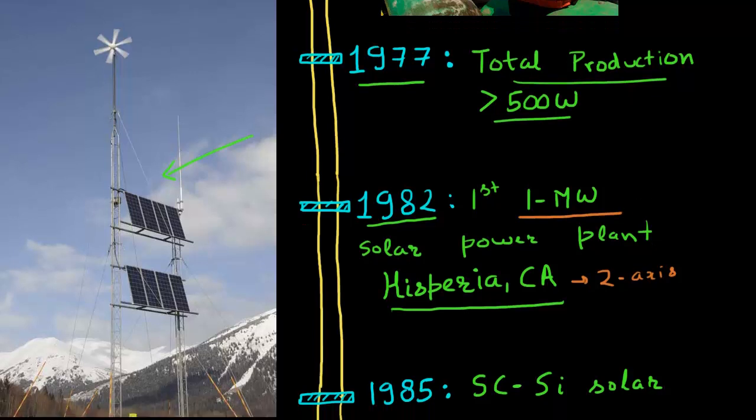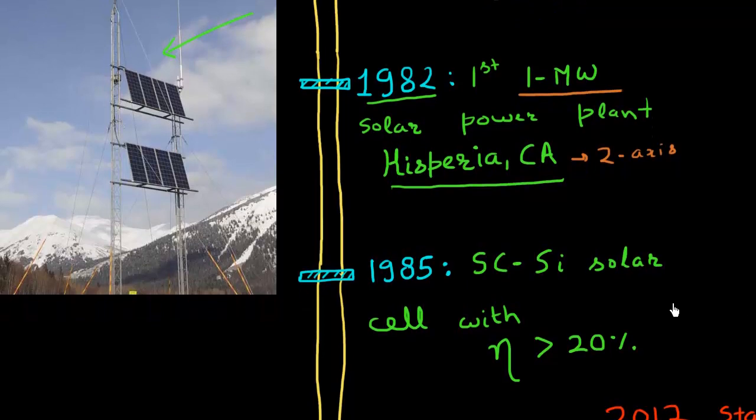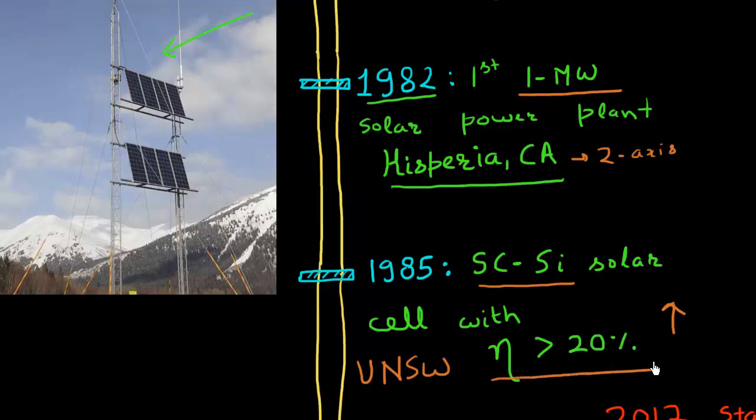At the same time, the efficiencies of these cells kept on rising. In 1985, there was a silicon single crystalline based solar cell demonstrated by Martin Green and his team at University of South Wales in Australia. They demonstrated this cell with efficiency of more than 20%. We have come a long way since then.